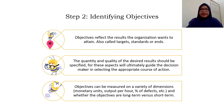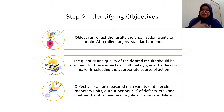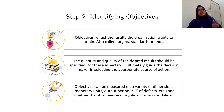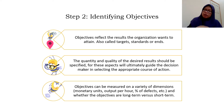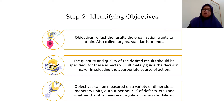Step 2 is identifying objectives. Objectives reflect the results the organisation wants to attain, also called targets, standards, or ends. Before the manager or leader wants to solve the situation — the problems or take the opportunity — they must know what the objectives of the organisation are, so that whatever decision they make is according to the objective and for the best of the organisation.